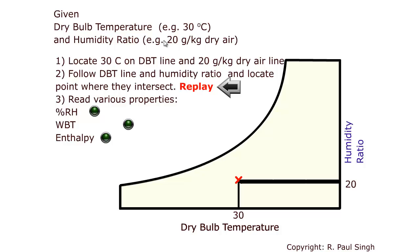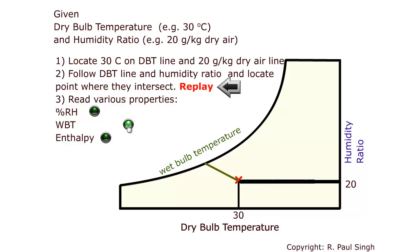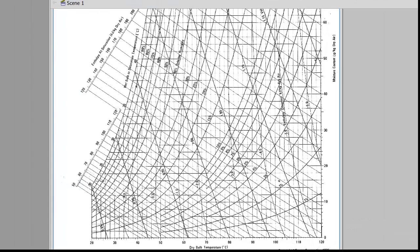In this example, the dry bulb temperature is 30 degrees C and humidity ratio is 20 grams per kilogram dry air. On the chart we identify the point at 30 degrees C dry bulb temperature and 20 grams per kilogram humidity ratio. Once that point is located, we read the relative humidity from the relative humidity curve, the wet bulb temperature along the wet bulb temperature line, and extending that line further gives the enthalpy value. By knowing two independent properties we can identify a point on the psychrometric chart and read all other remaining property values following these procedures.